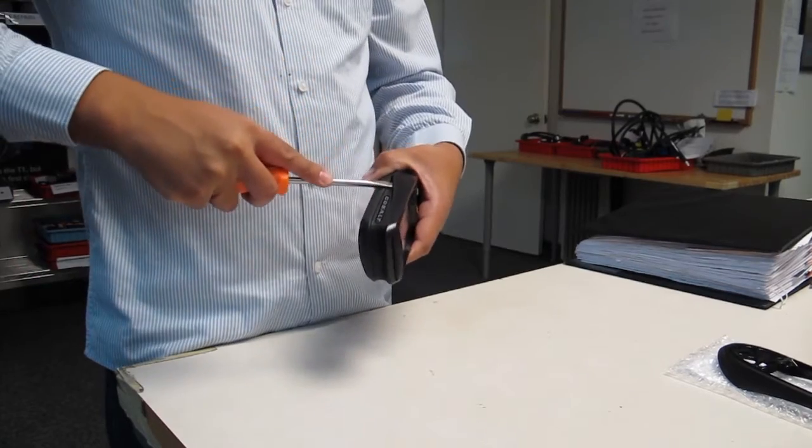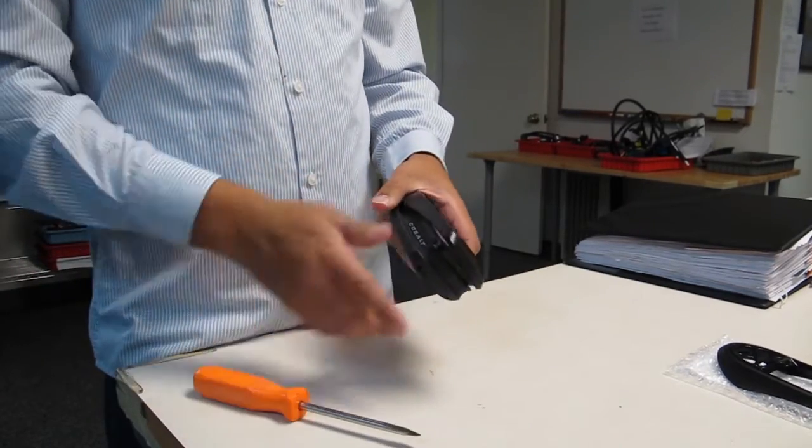If the Cobalt passes inspection, the final step is to remove and replace the top cover.